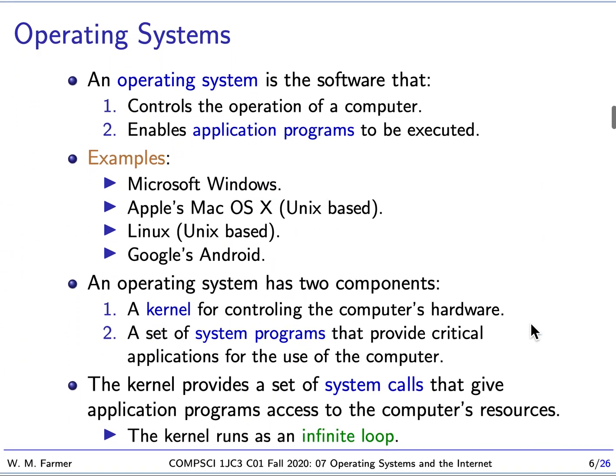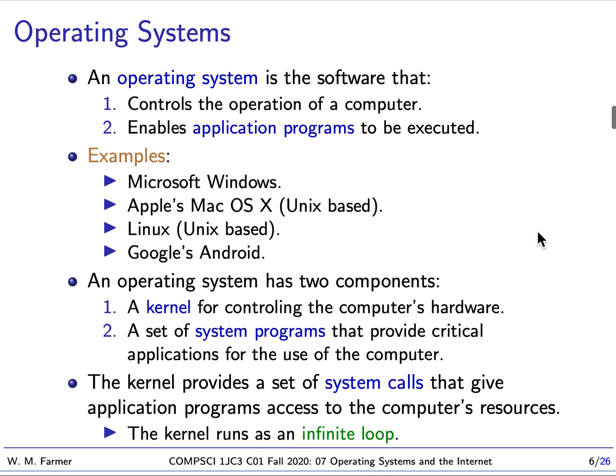Now we're going to a really big subject: operating systems. If you think about a computer, it's a piece of hardware — what controls it is the operating system. In a sense, a computer is just a piece of hardware that has a program running on it, and this program is the operating system. The purpose of the operating system is to enable what are called application programs to be executed. So the operating system is a program, but it's a program to enable other programs that run on the computer.